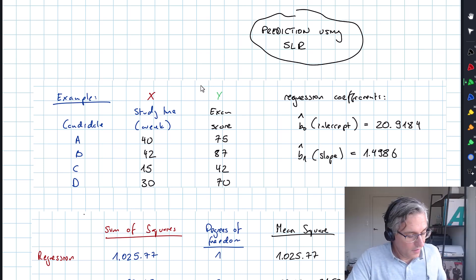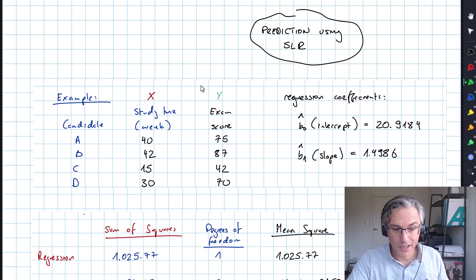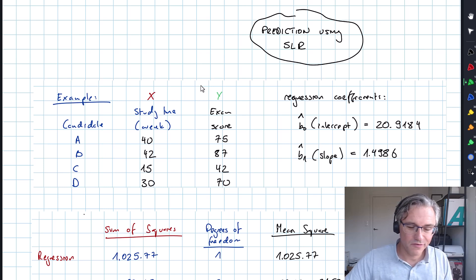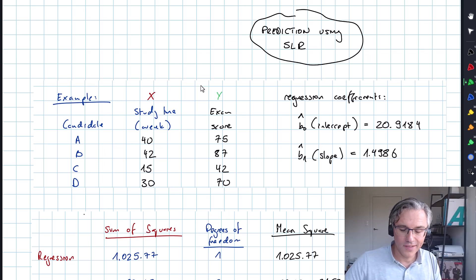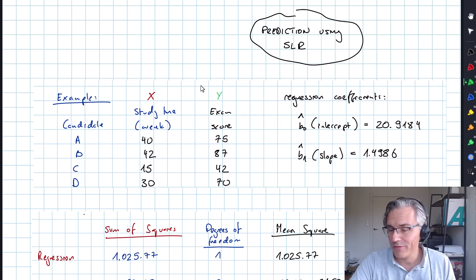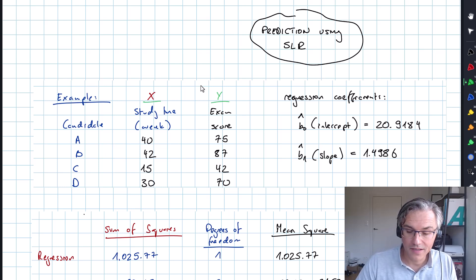In this video we are looking at how the simple linear regression model can be used to make predictions. As you've seen in the past couple of videos, we're going to base this on the example where we've got four hypothetical CFA candidates taking the level one exam. X is the study time as measured in weeks, and Y is their respective exam scores.